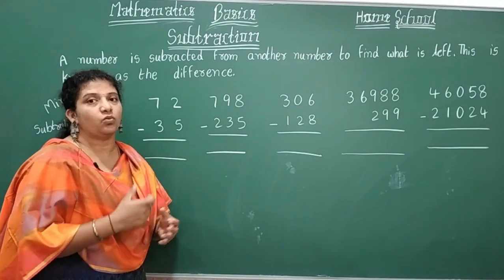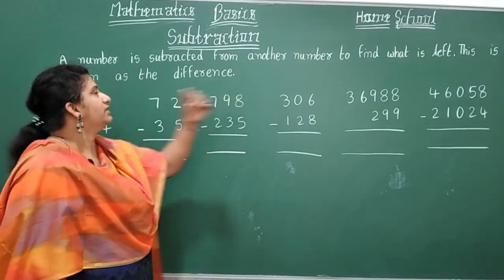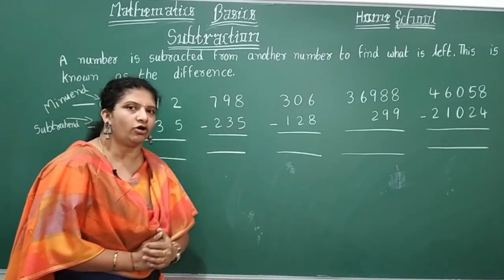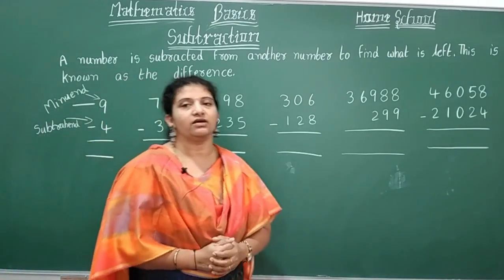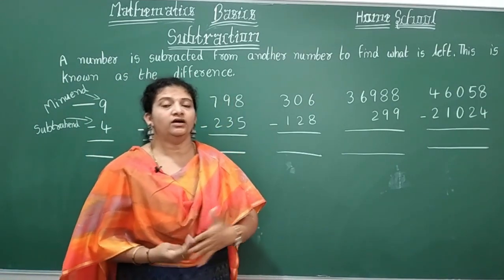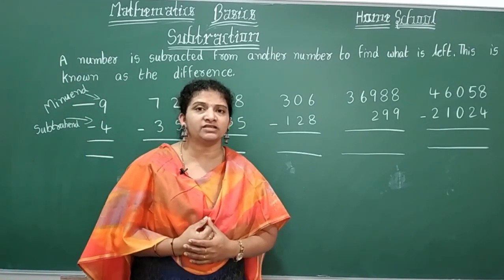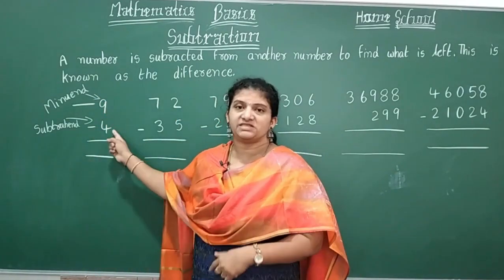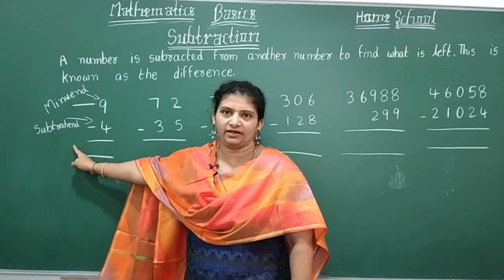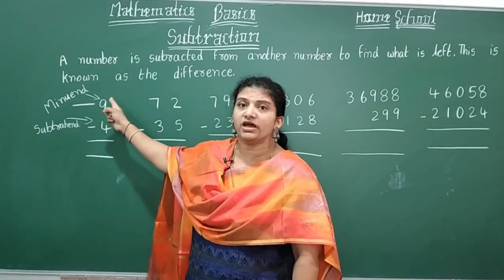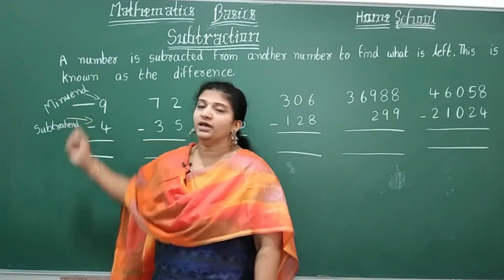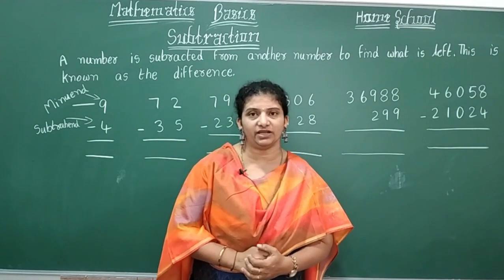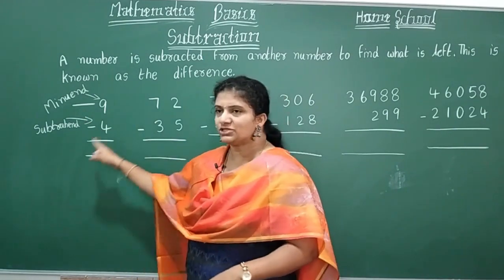The result we need to find is called the difference. In subtraction, the number which you are subtracting is called the subtrahend, the number from which you are subtracting is called the minuend, and the answer you get is called the difference.